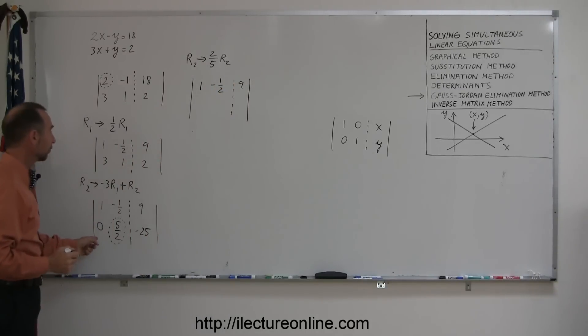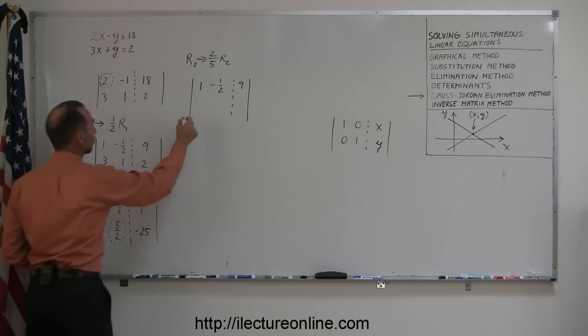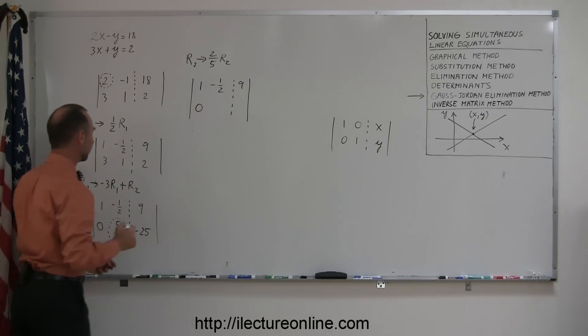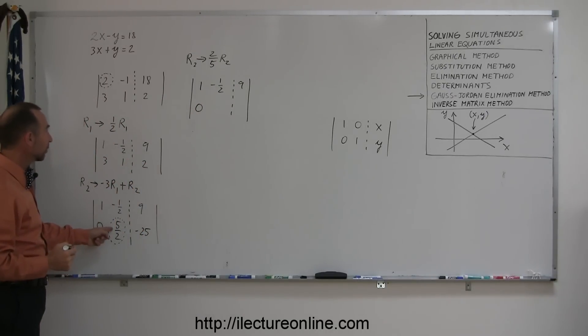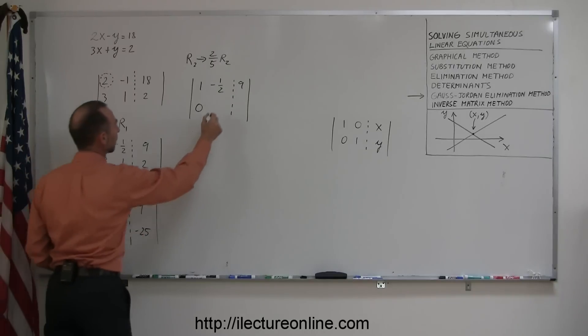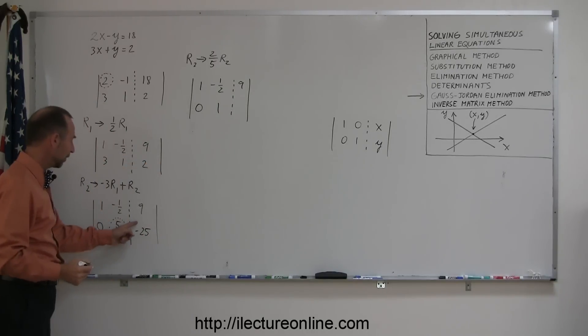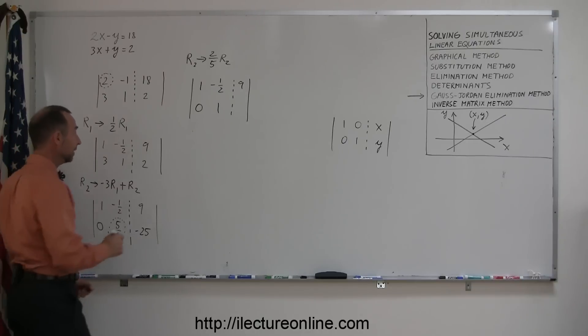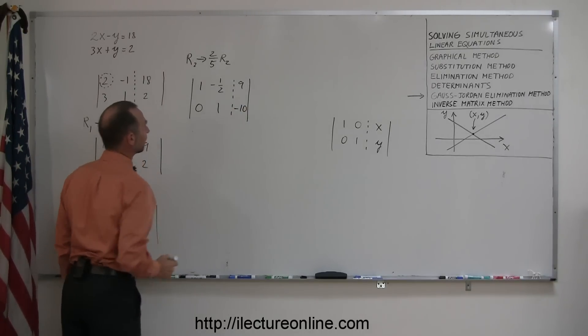It stays as a 0. Multiplying this by 2 fifths, that becomes a 1. And multiplying this by 2 fifths, well, 25 divided by 5 is 5, times 2 is 10. And since it's negative, this becomes a negative 10. I'm almost there. Notice that these three numbers now look like these three numbers over here.